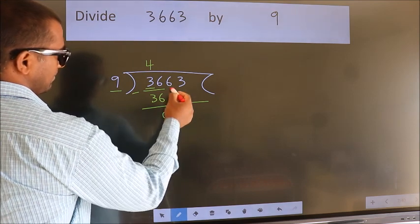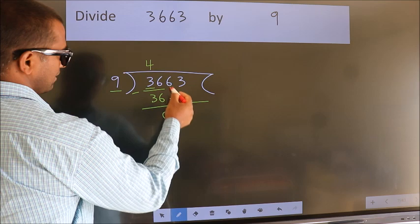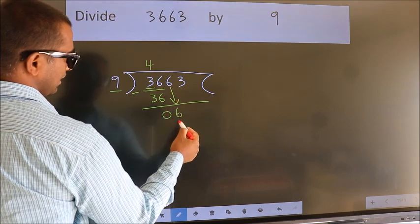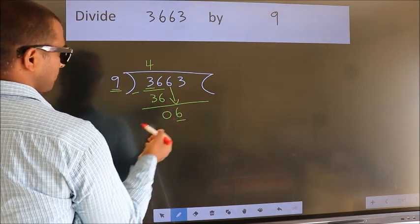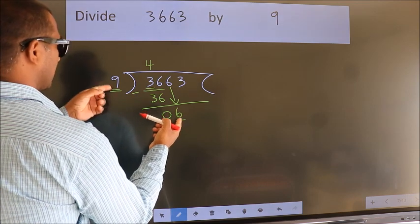After this, bring down the beside number. So six down. Here we have 6, here 9. Six is smaller than nine.